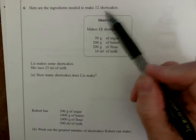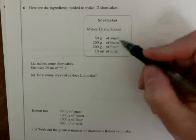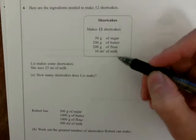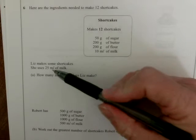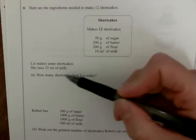So, here are the ingredients needed to make 12 shortcakes. We have to have these ingredients exact to make up our shortcakes. Liz makes some shortcakes and she uses 25 milliliters of milk. So, how many does she make altogether?